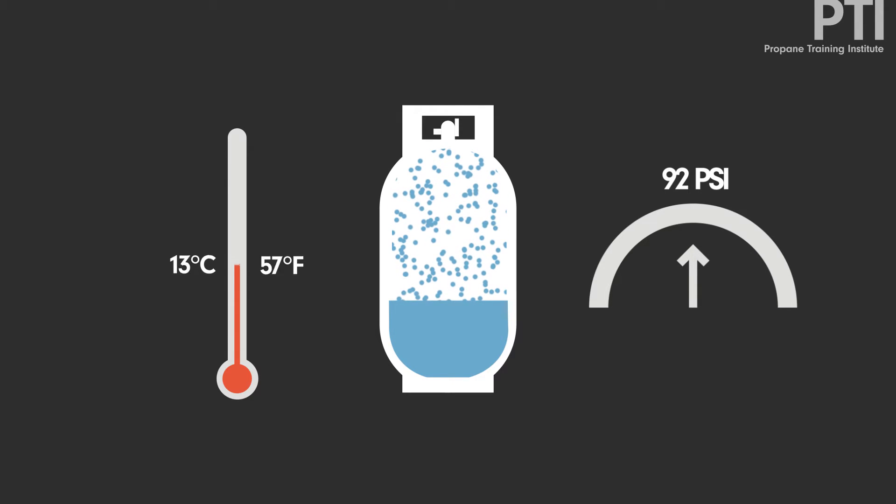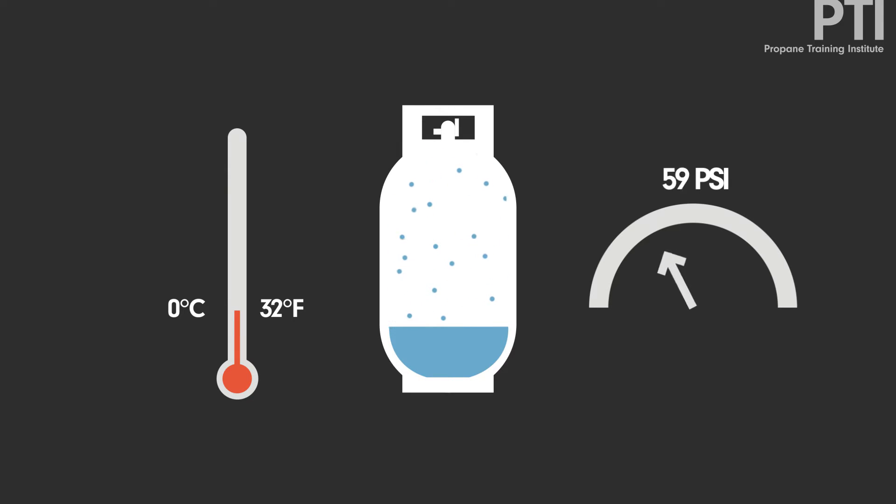If the temperature decreases, the propane liquid contracts and the gas condenses. The system settles at a lower vapor pressure.